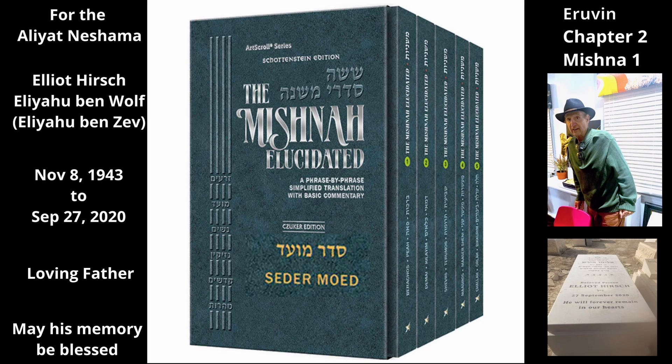This prohibition posed a difficulty to pilgrims traveling to the temple for the pilgrimage festivals — Pesach, Shavuot, and Sukkot — because it meant they could not draw water for their animals on Shabbat from the wells along the route. To solve this problem, the rabbis allowed pilgrims to use a unique arrangement of minimal makeshift partitions to convert the area around the well into a private domain, so that they may take water from the well on Shabbos. The Mishnah describes these partitions and how they must be set up.